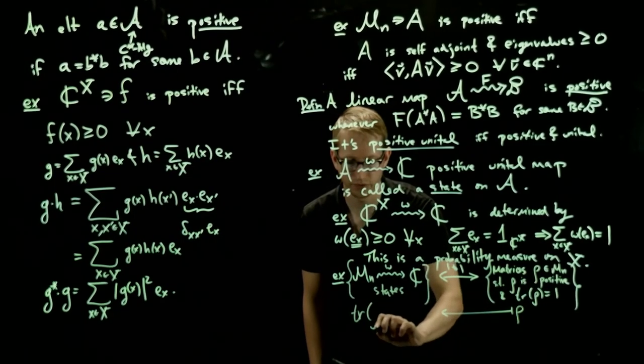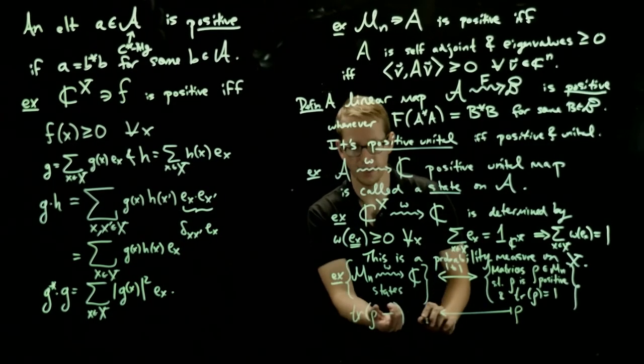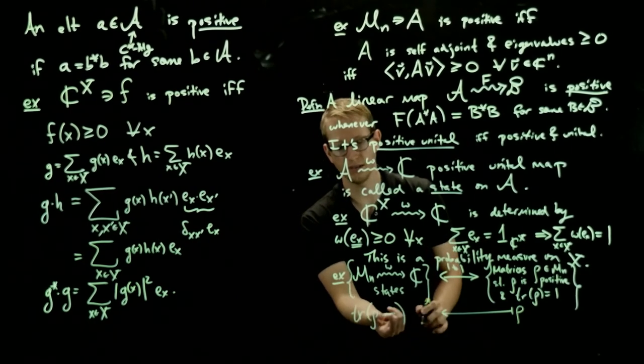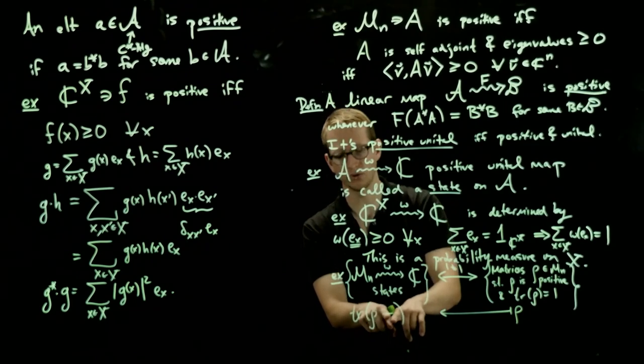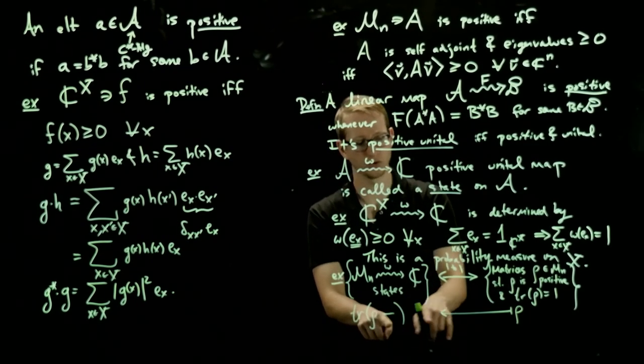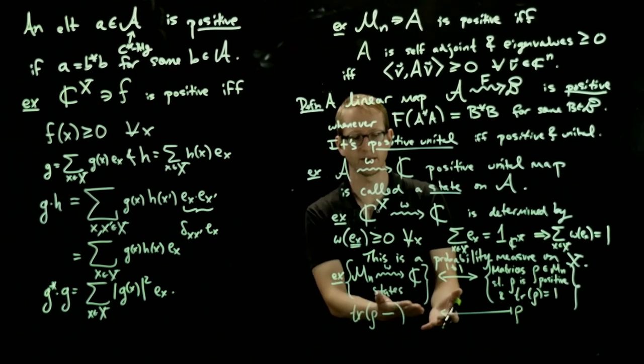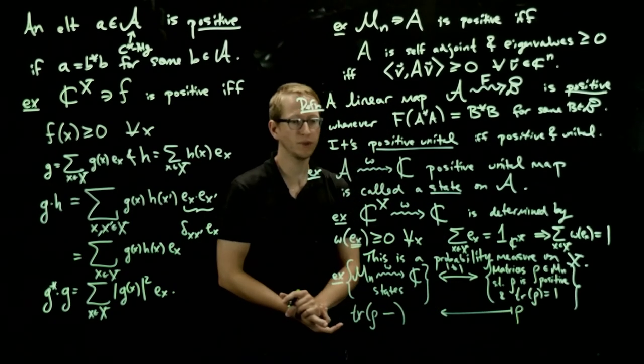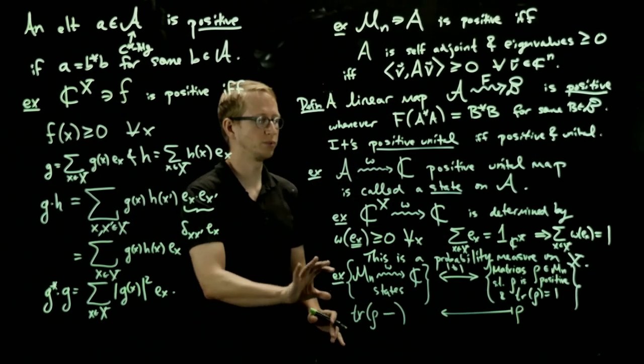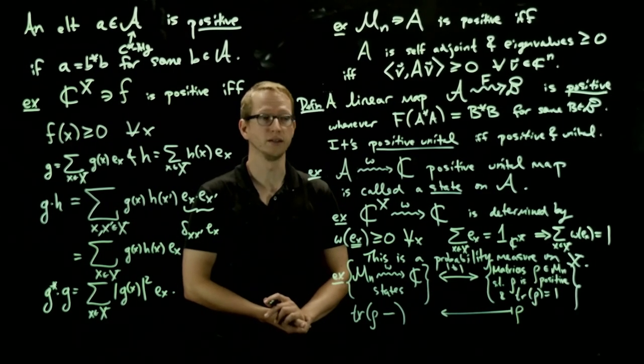This one-to-one correspondence takes a specific density matrix rho and produces for us a state that is given by the trace of rho and then we apply any matrix here. So what this means is this is a function on n by n matrices. We plug in an n by n matrix A, we multiply by the matrix rho, take the trace, that gives us a complex number, and that turns out to be a state. And we'll analyze why this one-to-one correspondence holds in more detail shortly.